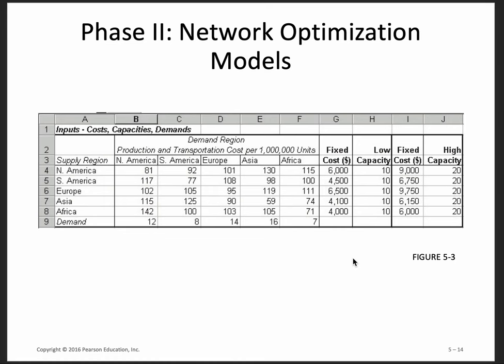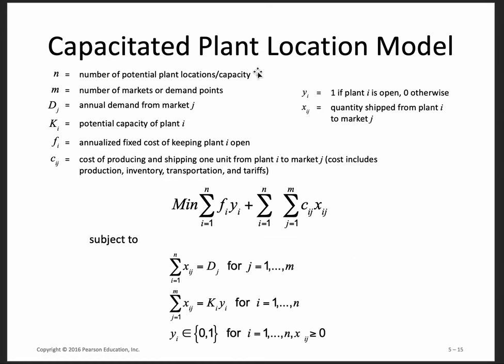This is an example of something we'll go through in a later video. In the next video we're going to talk about the capacitated facility location model — I'll use that term rather than 'plant location model' — which helps us locate facilities that have limited capacities. It's a trade-off between how much capacity you can use, how expensive it is, and what kind of facility you can open. So that's the plan for the next video. Take care.